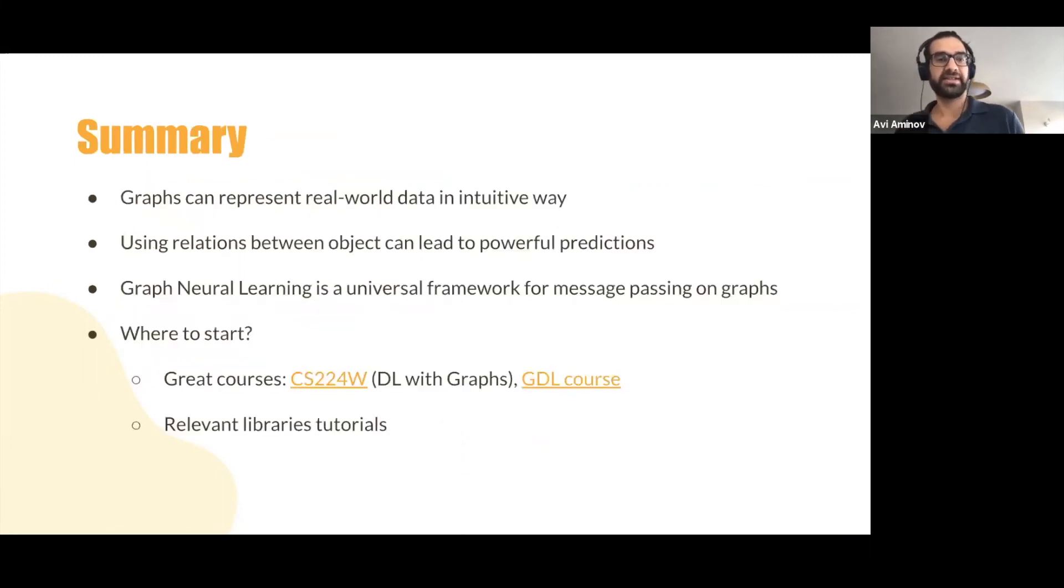Just to summarize stuff that we've gone through. So graphs can represent real world data in an intuitive way and really recommend it to look at it that way. It's intuitive for us as humans. It's a bit easier for the computer to understand, but we have ways to help them. Using relationships between objects together with their attributes can lead to powerful predictions. And what I wanted to convey is that graph neural networks are a universal framework for message passing on graphs. It's just message passing generalized in a way that helps you capture the real important aspects of your data without specifying it explicitly, just by looking at the data.